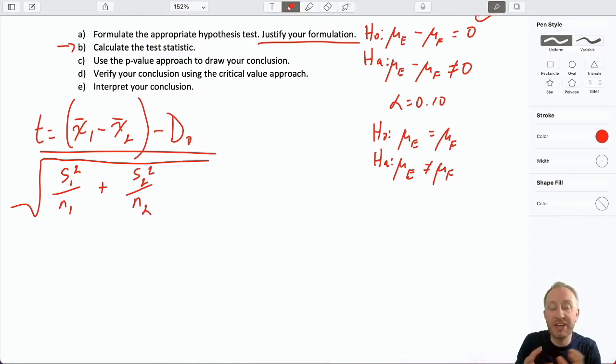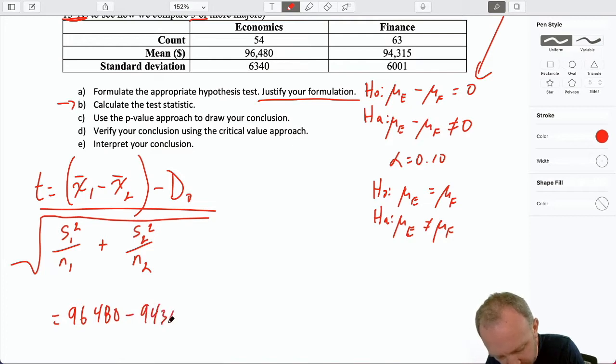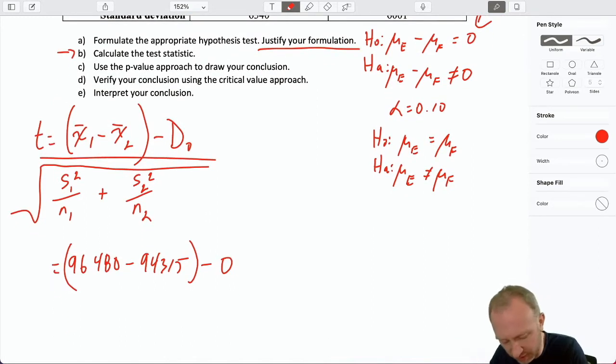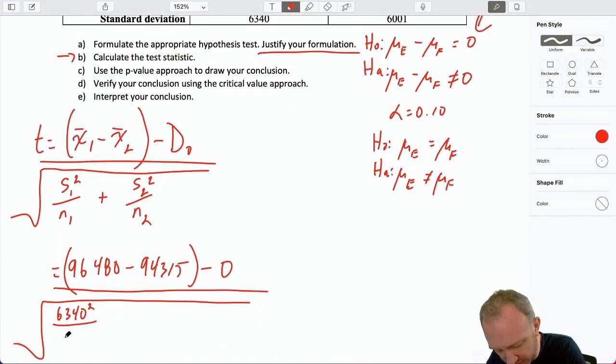Here there's no such assumption being made. So here, our standard error is actually reliant on both of those sample variances. So it doesn't change, it doesn't have any complication to calculating that test statistic. There's no separate step in calculating that. We don't have to calculate that pooled estimator. We just use what we have. So let's just go ahead and plug in our numbers here. 96,480 minus 94,315. Again, I'll put that hypothesized difference of zero. We all know it doesn't change anything. I'm just being very thorough.